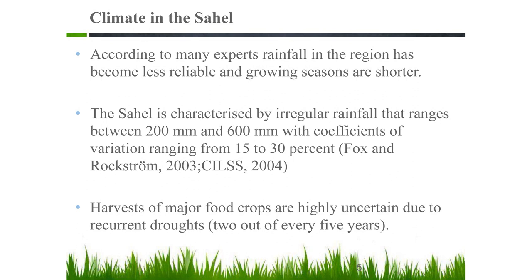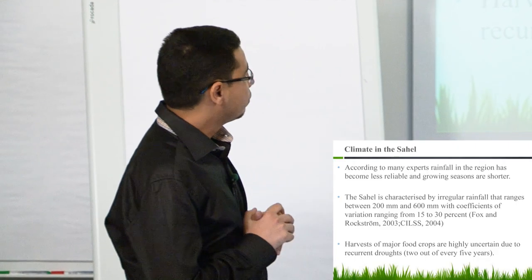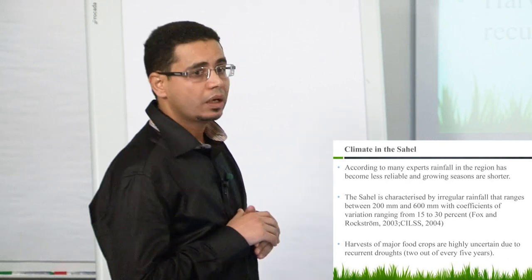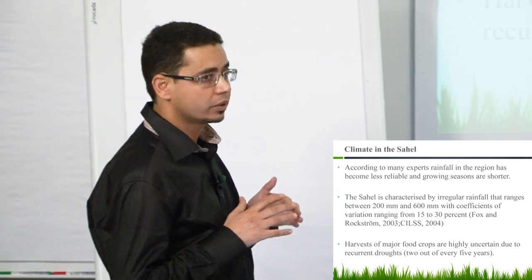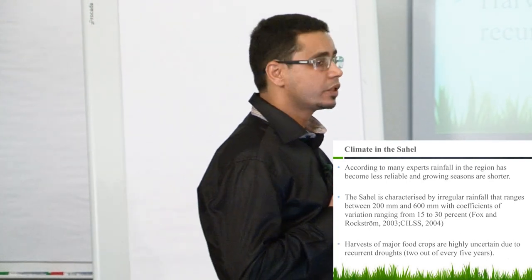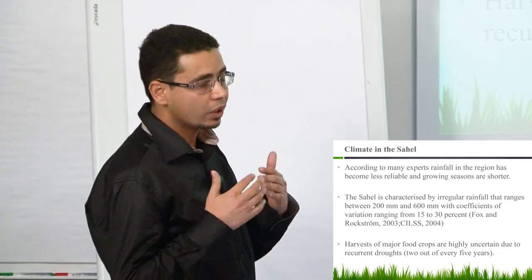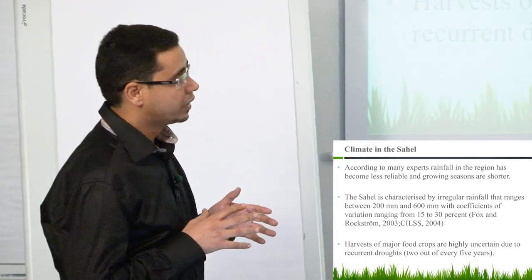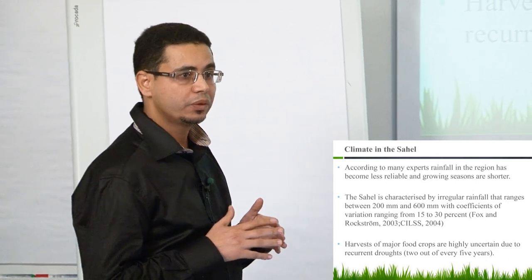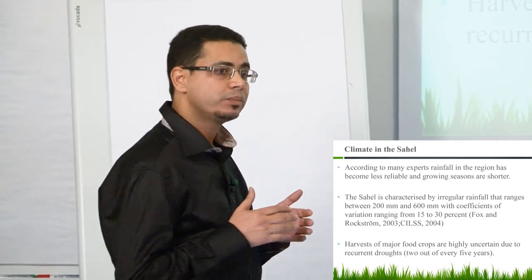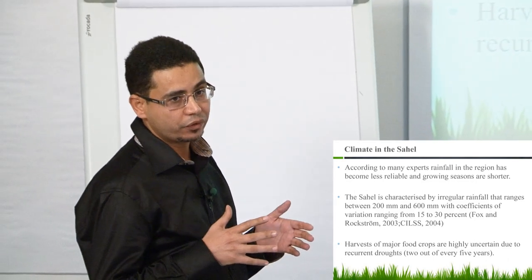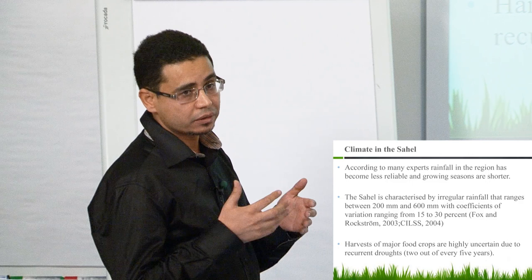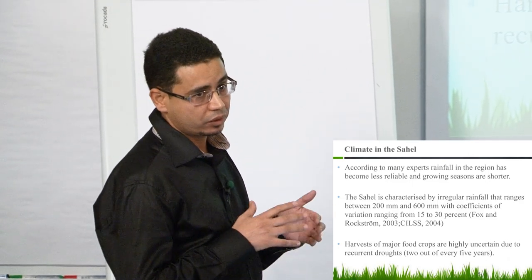Let me first give you a brief idea about the climate in the Sahel. According to different studies, the climate is becoming drier, and the growing season is shorter in the region, which means there is less precipitation and higher temperature. There is also high uncertainty about precipitation, which makes any kind of prediction almost impossible. This uncertainty may affect the behavior of farmers, and it is really interesting for us to see how farmers behave facing such high uncertainty.